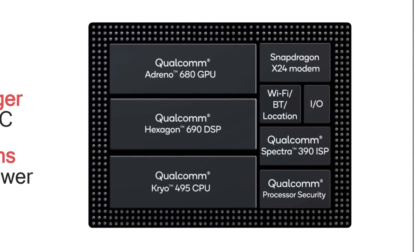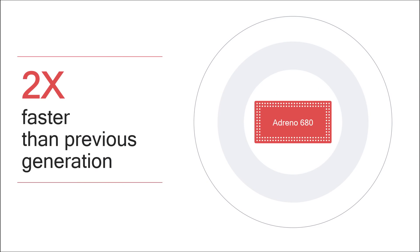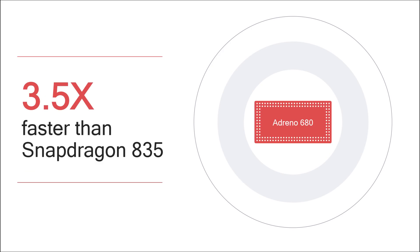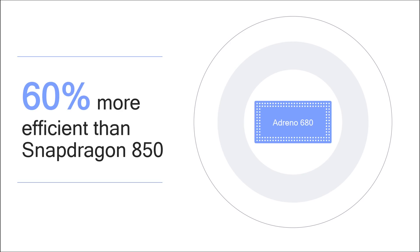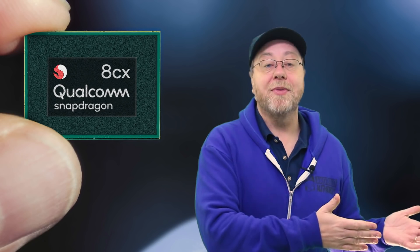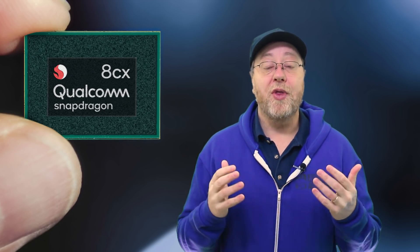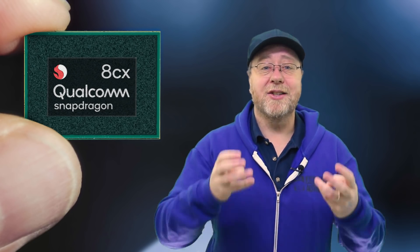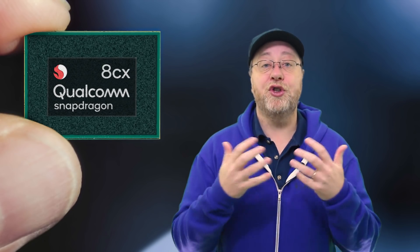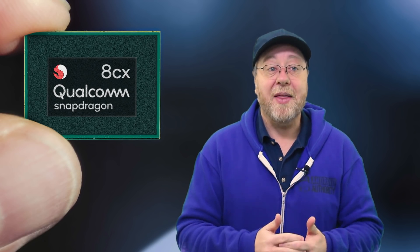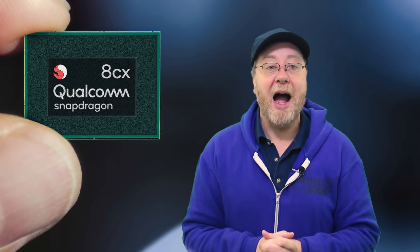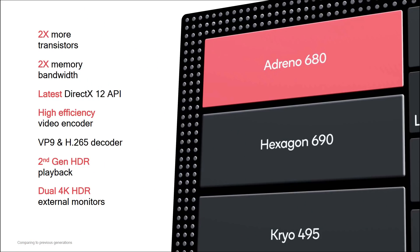However, you'll notice we now have the Adreno 680 GPU and the Cryo 495 CPU. The Adreno 680 is twice as fast as the GPU inside the Snapdragon 845 — in fact, 3.5 times faster than the GPU in the Snapdragon 835 — and yet 60% more power efficient than the GPU in the Snapdragon 850. They doubled the speed because people do play games on laptops, and they want this to behave just like every other laptop.